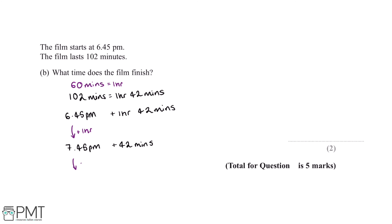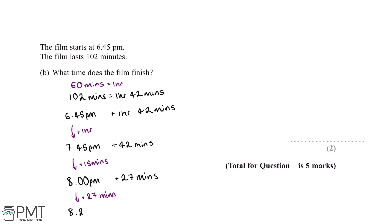So the next thing we can do is add 15 minutes, and this will make the time 8pm. And if we do 42 minus 15, this tells us that there are 27 minutes left of the film. So the final thing we can do is add 27 minutes to the time, and this tells us that the film finishes at 8.27pm.